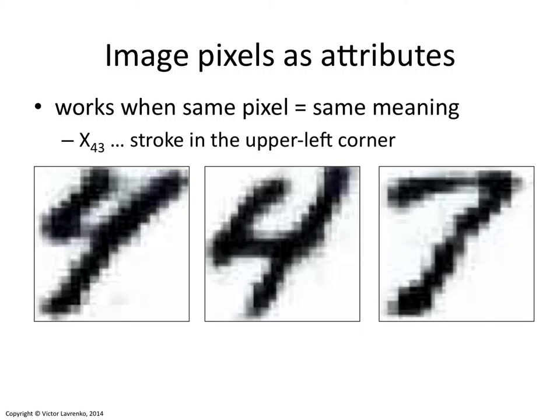It worked for digits for one very simple reason. With handwritten digits, you can use some vision techniques to preprocess the input such that the same pixel across different images has roughly the same meaning. For example, pixel number 43 has approximately the same meaning for both digits — it means is there or is there not a stroke in the upper left portion of a digit. And that's a pretty indicative thing for the value of the digit.